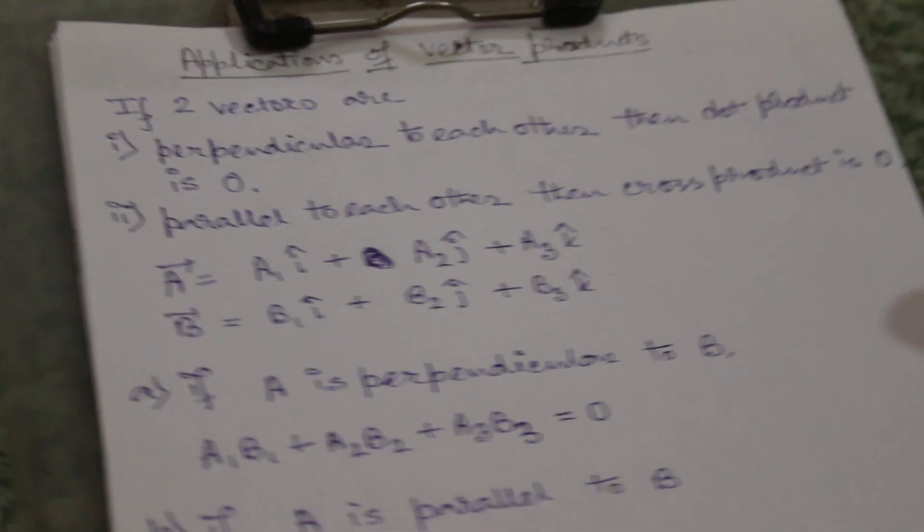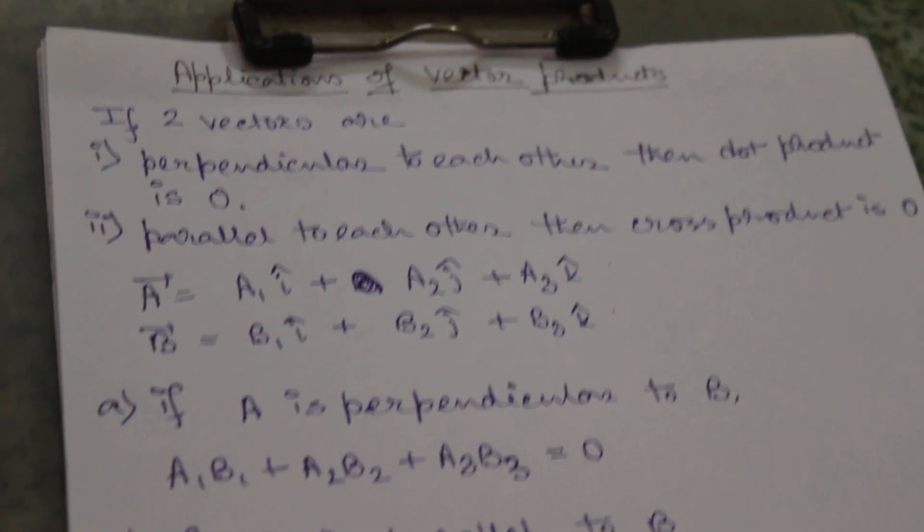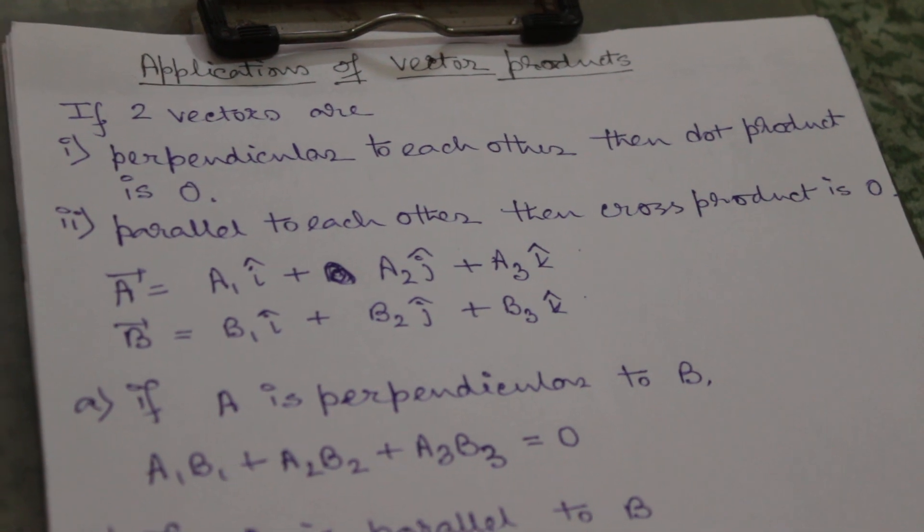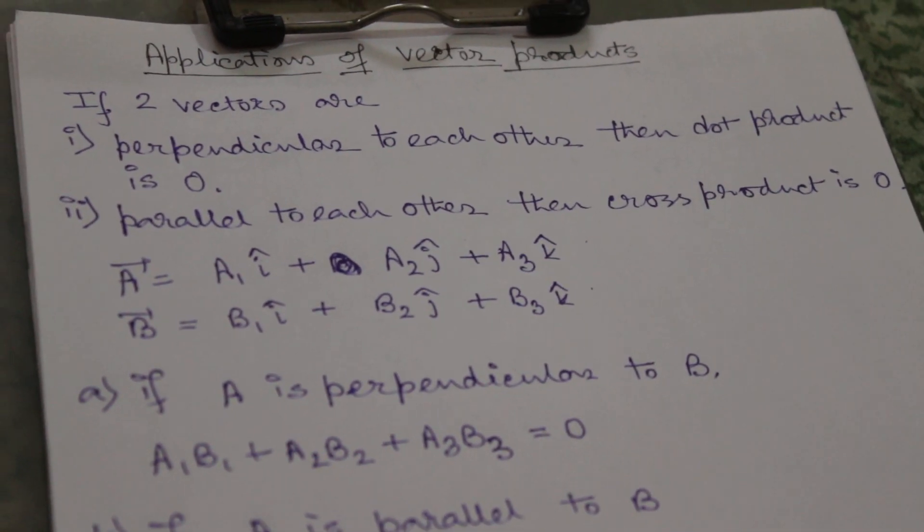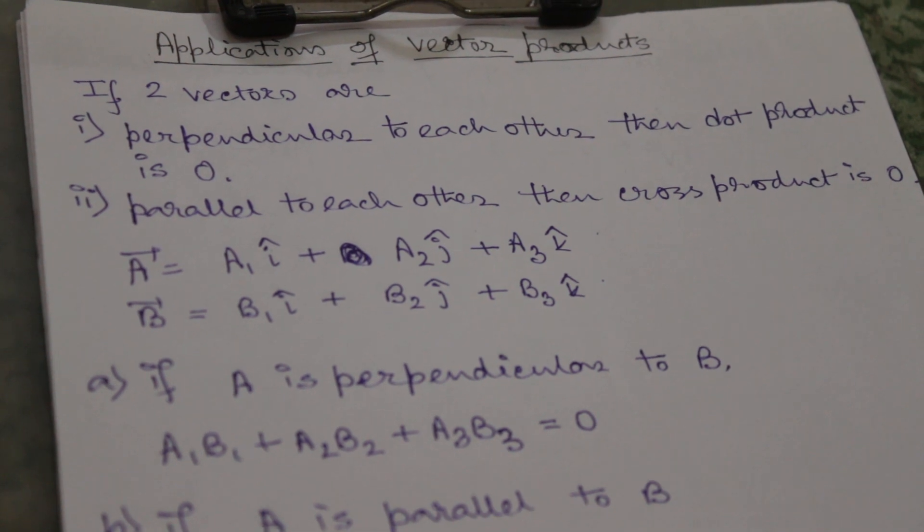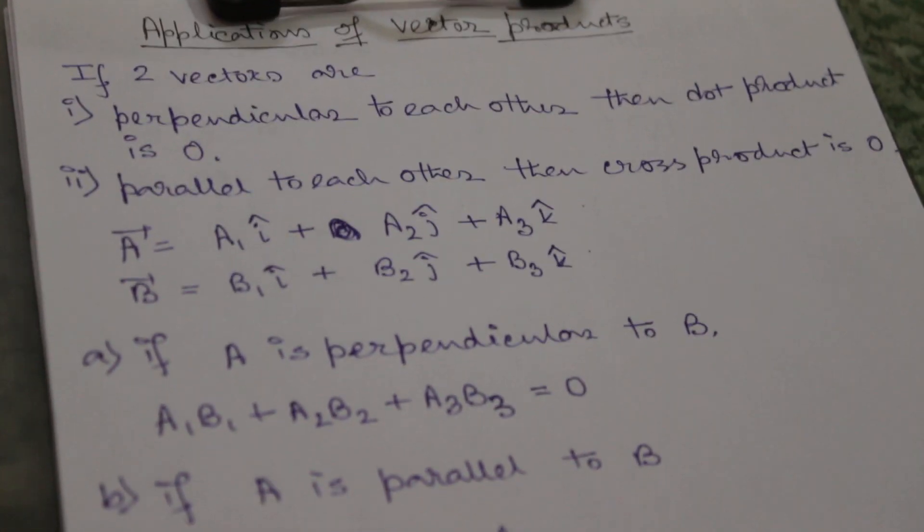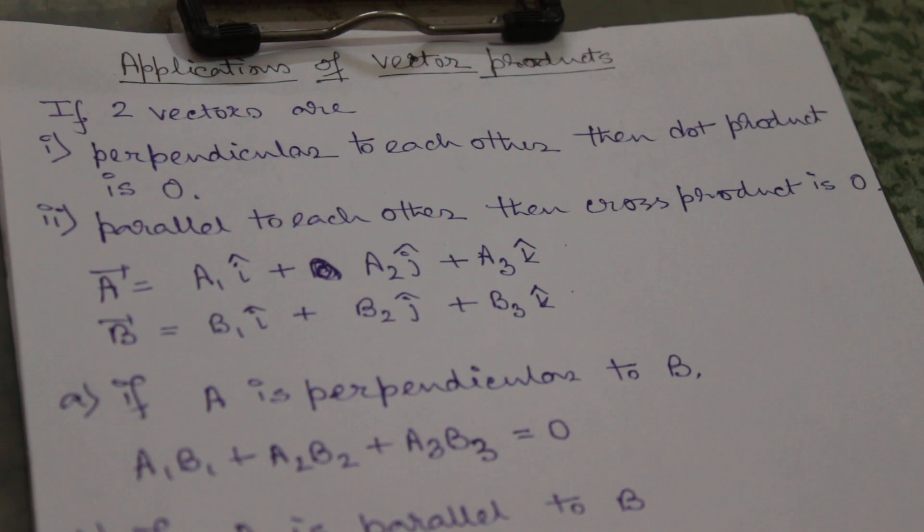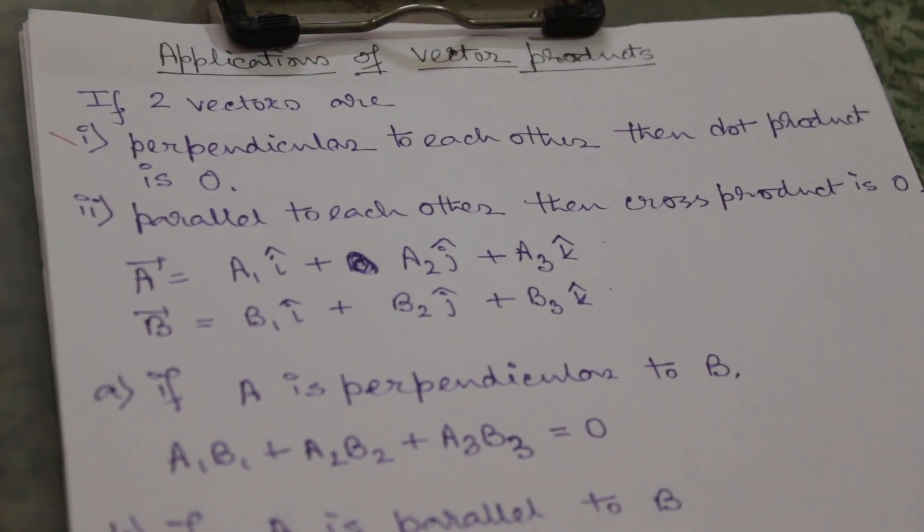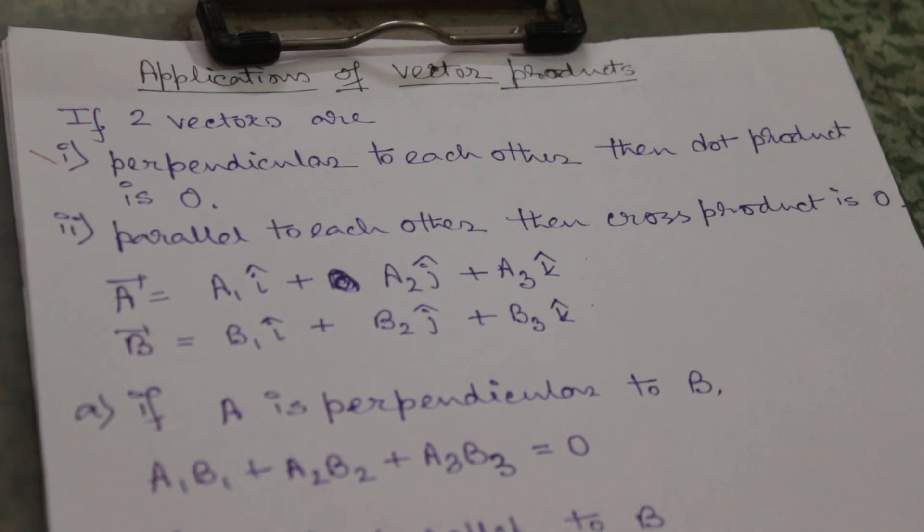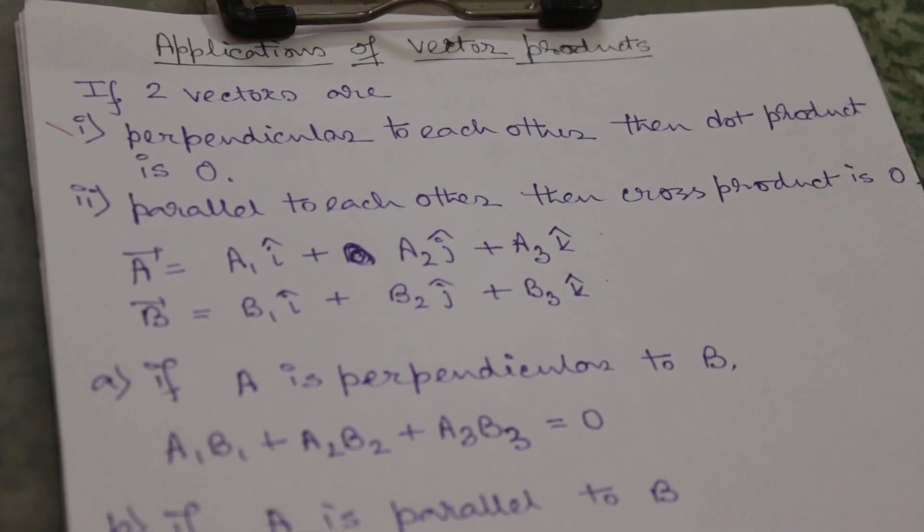We know there are two types of vector products: one is cross product and another is dot product. Today we will discuss about its applications. In this video, we will discuss about perpendicular or parallel vectors. If two vectors are perpendicular, then their dot product will be zero, as theta will be 90 degrees and cos theta we know is zero.